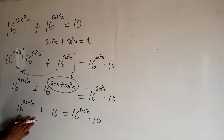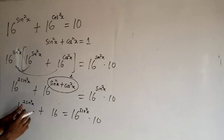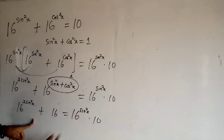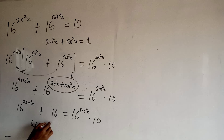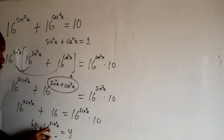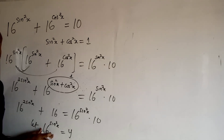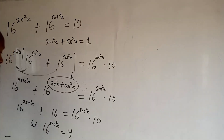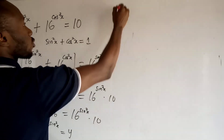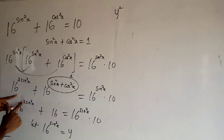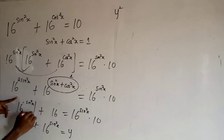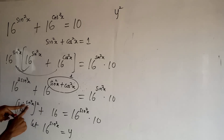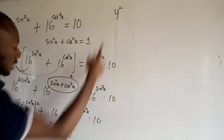At this point, I want to make 16 to the power sin squared x into a variable. So let 16 to the power sin squared x equal y. I'm going to substitute y in place of this expression. So 16 to the power 2 sin squared x becomes y squared, and I have y squared plus 16 equals 10y.